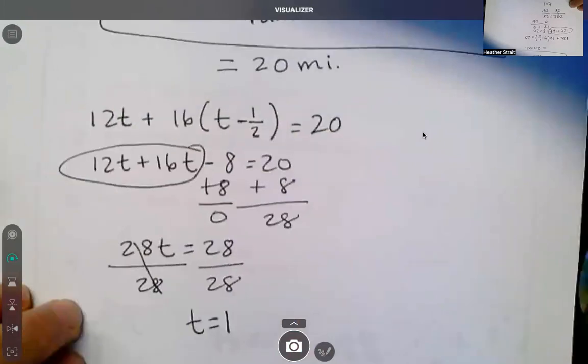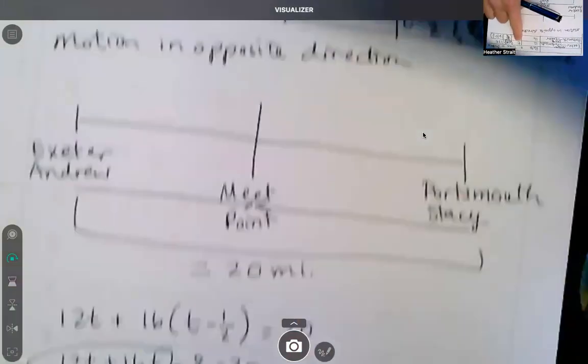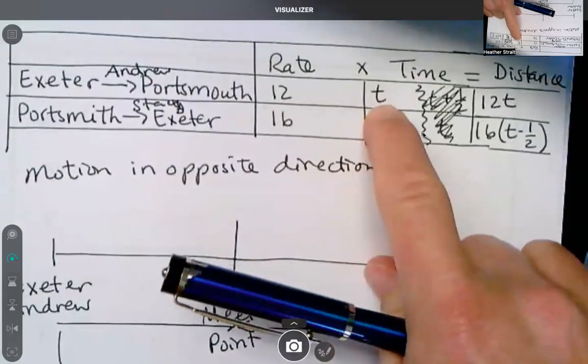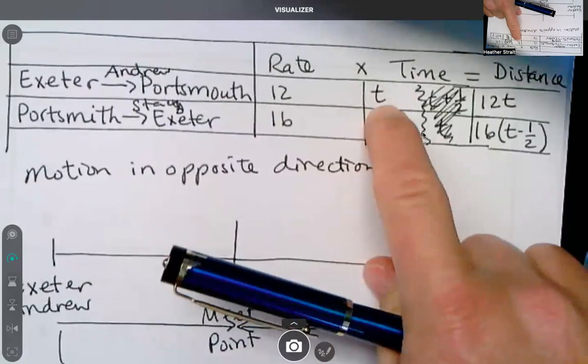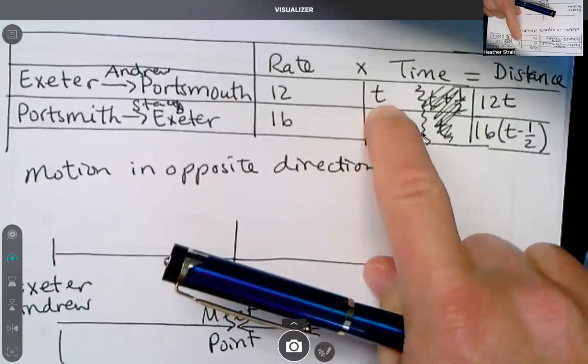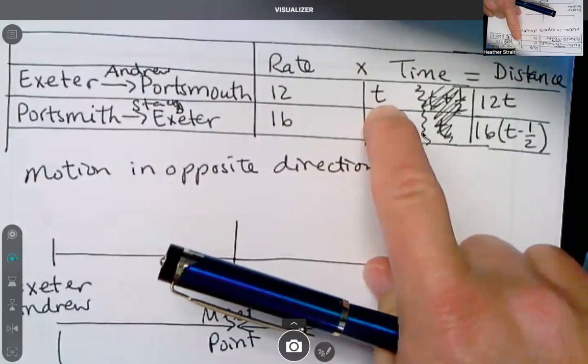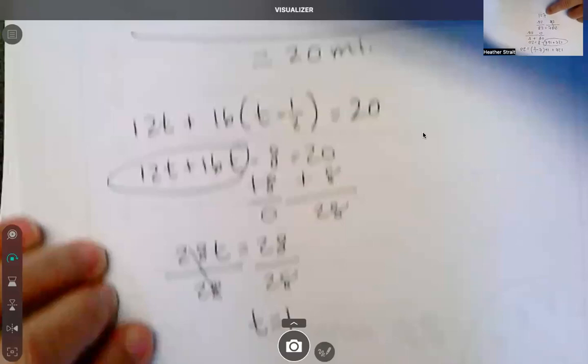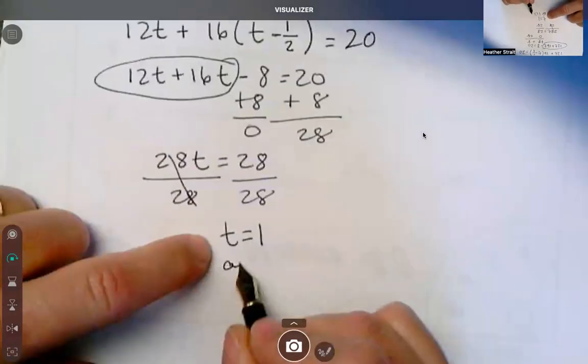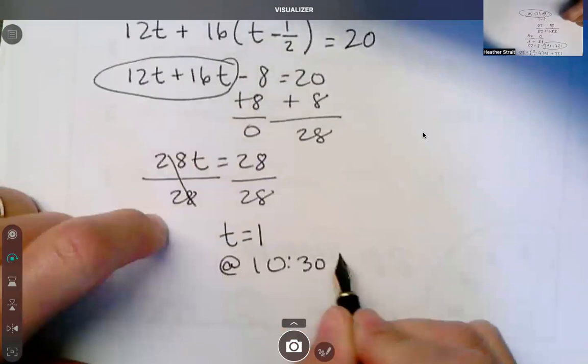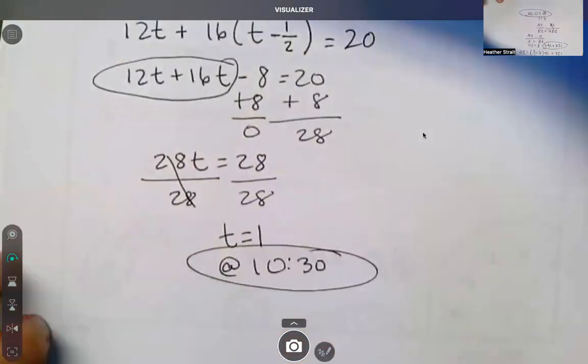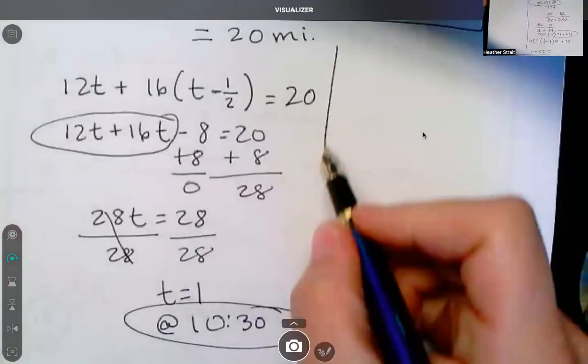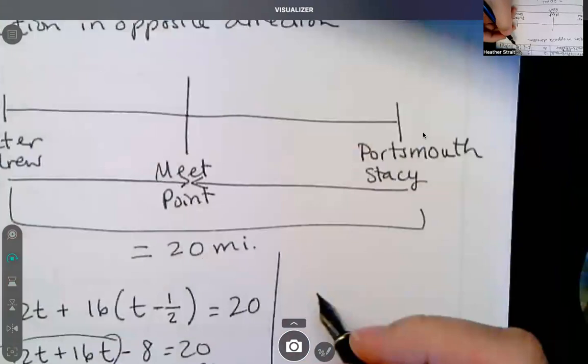It's asking what time. So who's T? In this one, Andrew. So his time that he rode, how much did he ride his bike for? One hour. So what time did he leave? 9:30. What's an hour later? 10:30. So they met. Do not tell me T equals 1. You tell me at 10:30. That's the answer because it's asking what time, but let's say you did your equation the other way.